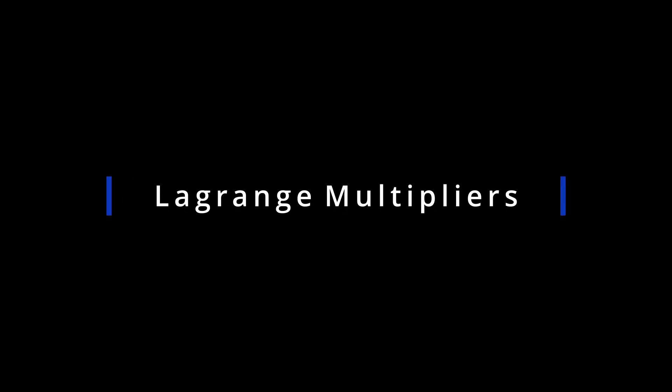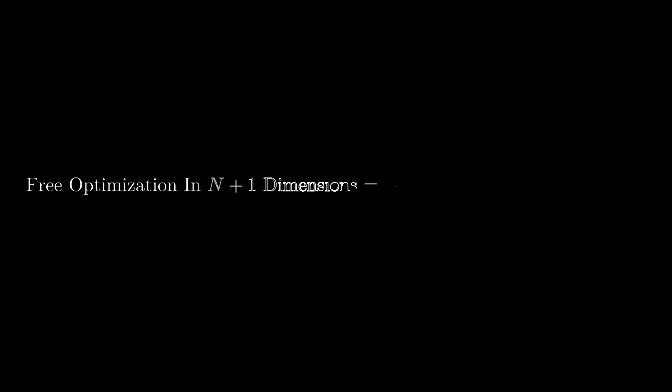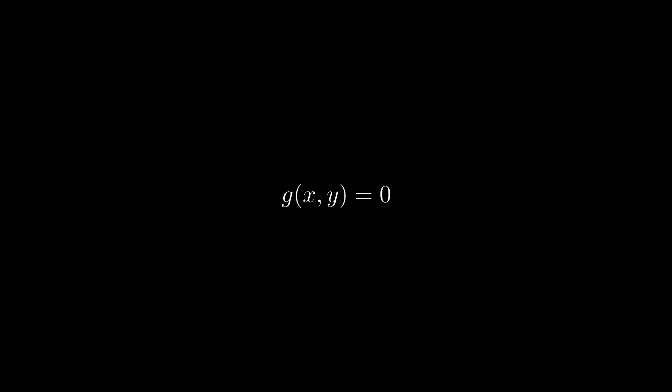Now let's get to Lagrange's little idea. Lagrange noticed that there's always a free optimization problem in n plus 1 dimensions that has the same solution as the constrained optimization problem in n minus 1 dimensions. He might have stumbled upon this fact by following some logic like this. First, note that any constraint function can be written in the normal form g of x,y equals 0. Here we're using two dimensions, x and y, but all of this intuition holds in higher dimensions.